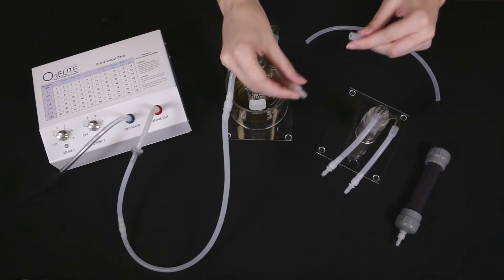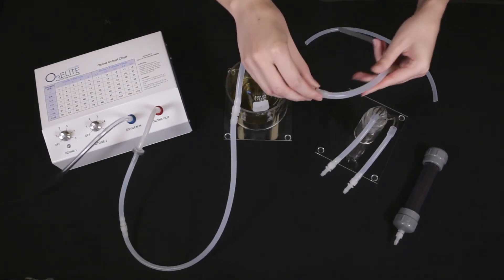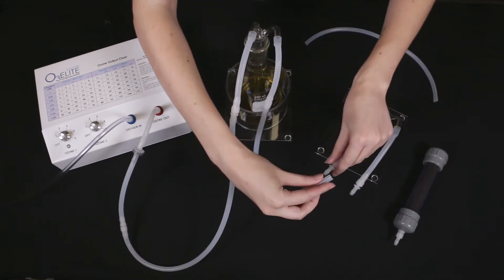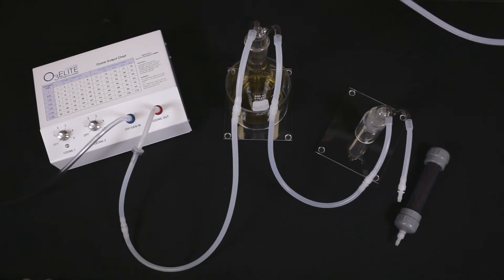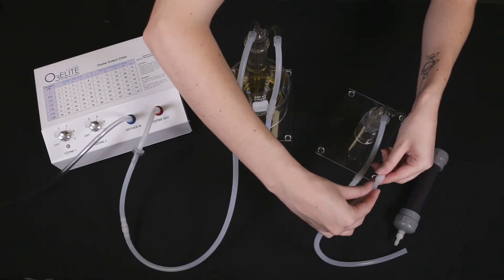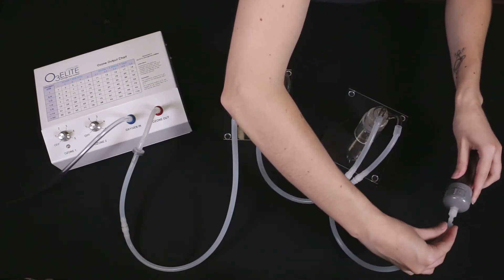If you plan on using the destruct with this system, place the trap between the oil bubbler and your ozone destruct system. Attach the tubing from the ozone out straw of the bubbler to the ozone in straw of the trap. Then, attach one end of the silicone tubing to the ozone out of the trap and the other end to the ozone destruct system.